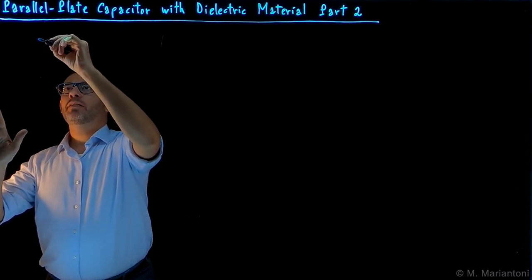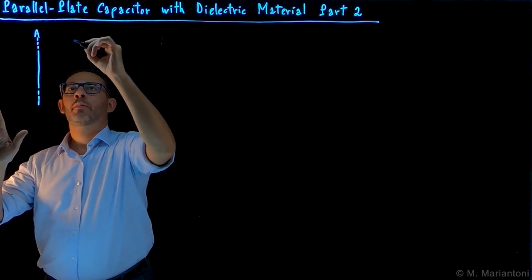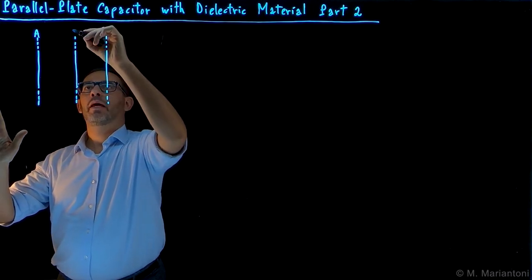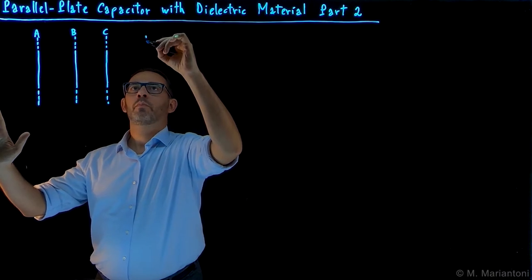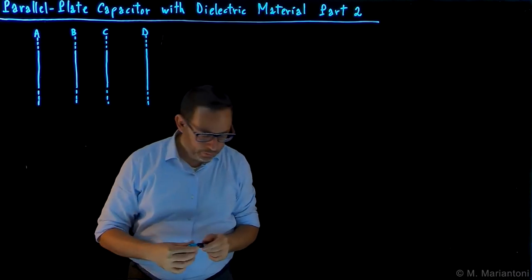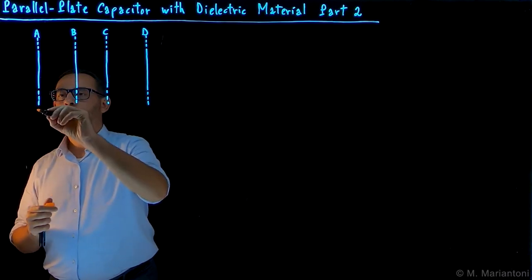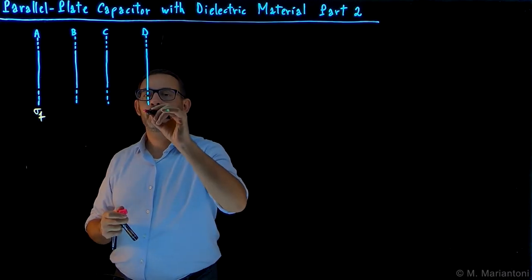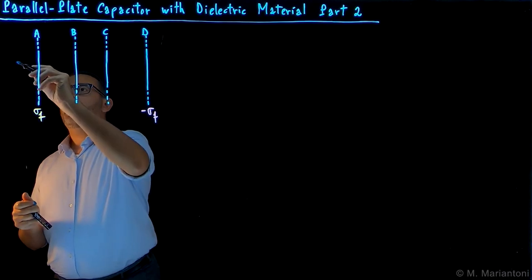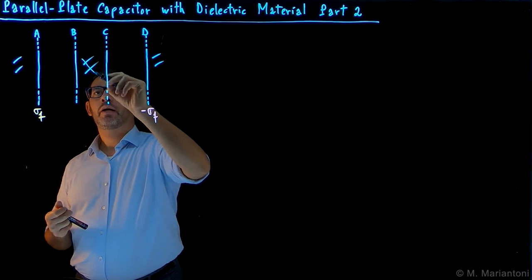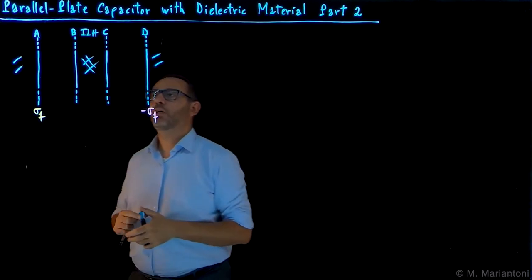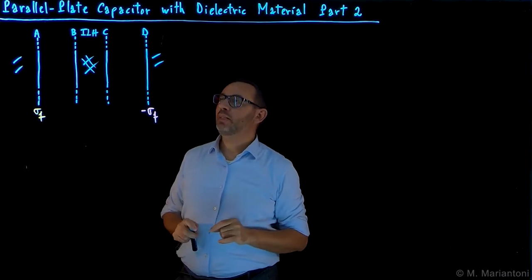I'll remind you that we have four interfaces: A, B, C, and D. Interface A is where we have the positive free charge, plus sigma_F. Interface D is where we have minus sigma_F, making this a parallel plate capacitor with balanced and opposite sign charges. In the region between A and B we have conducting material, whereas between B and C we have a linear homogeneous dielectric material. You can refer to the sketch in the previous video for more details about the various lengths involved in this problem.